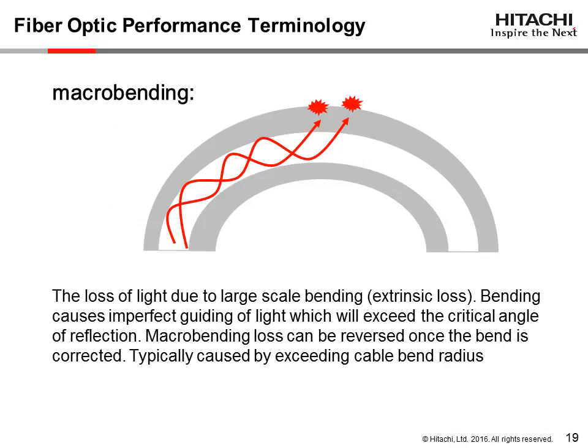Macrobending is the loss of light due to severe or repeated large-scale bending caused by external forces, typically caused during installation. Severe bending causes the imperfect guiding of light which will exceed the critical angle of internal reflection, allowing light to escape from the core into the cladding. Macrobending is typically caused by exceeding the bend radius of a cable and can be reversed once the bend is corrected.